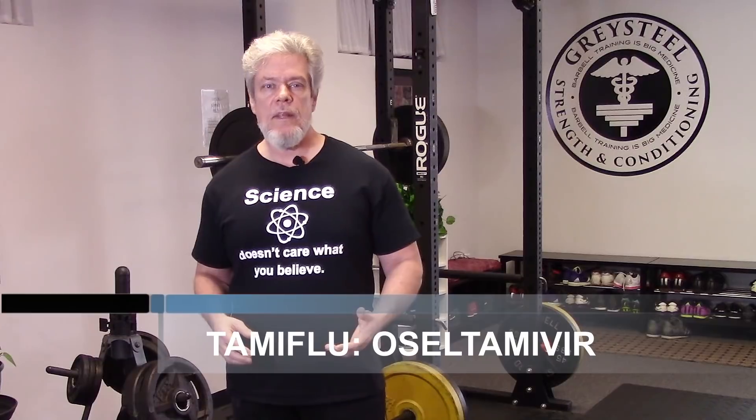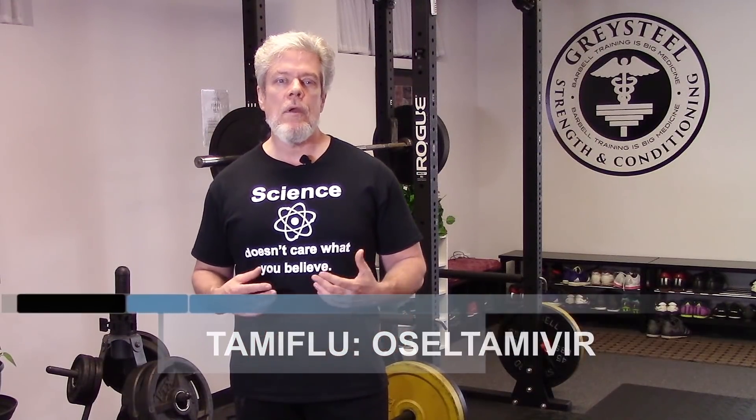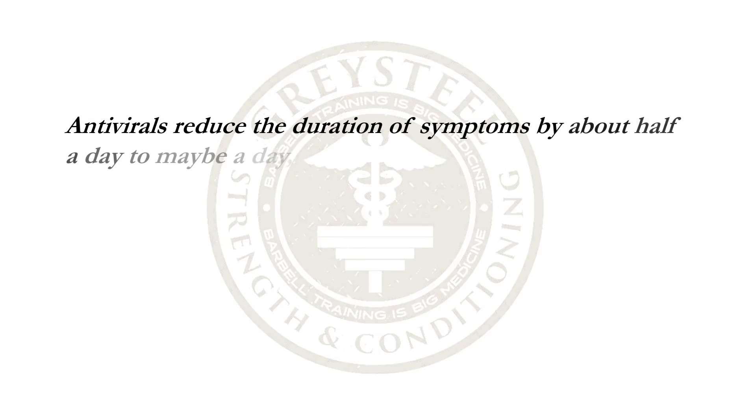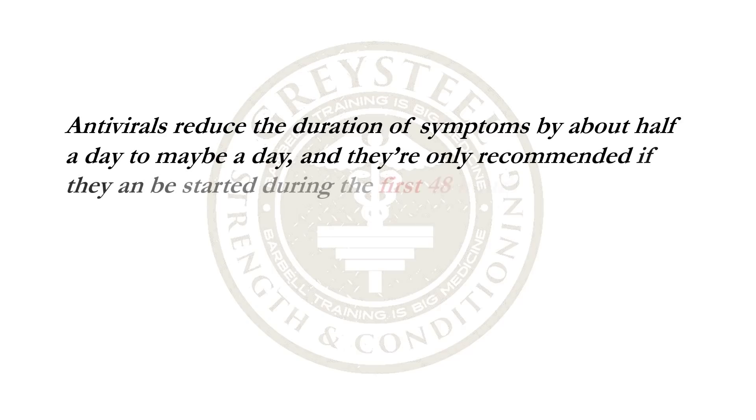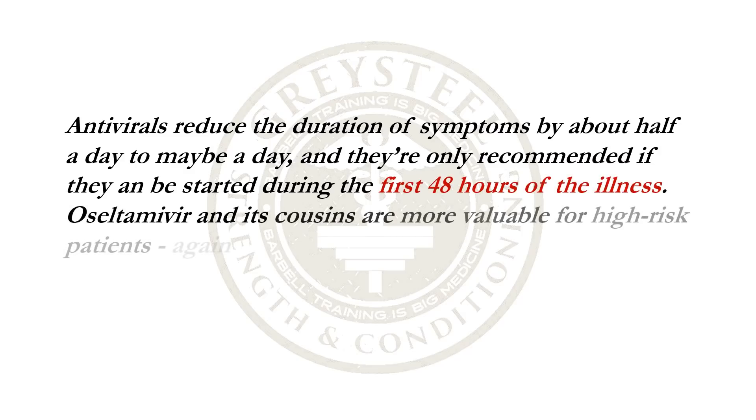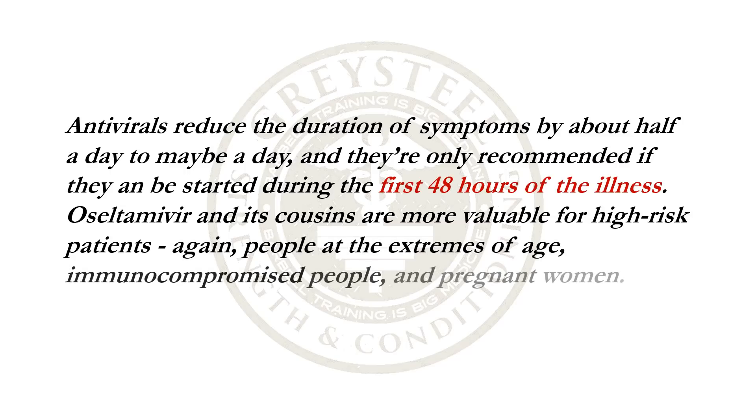You've all heard about antivirals like Tamiflu. Tamiflu is oseltamivir, an antiviral with activity against the neuraminidase antigen — so it's a neuraminidase inhibitor, which blocks the spread of newly produced virus from infected cells — and it can be used to fight influenza A and B. Oseltamivir and related medications are great to have in our arsenal, but like all medications, they have side effects: vomiting, diarrhea, headaches, even seizures. These medications aren't as effective as you'd hope — antivirals reduce the duration of symptoms by about half a day to maybe a day, and they're only recommended if started during the first 48 hours of illness. Oseltamivir is more valuable for high-risk patients: people at the extremes of age, immunocompromised people, and pregnant women. Beyond that, the risk-benefit trade-off isn't that great. They're not wonder drugs.